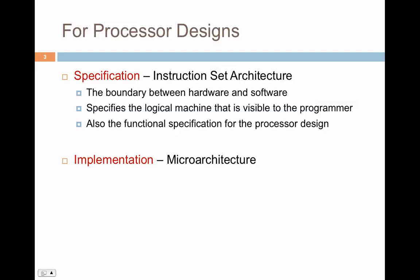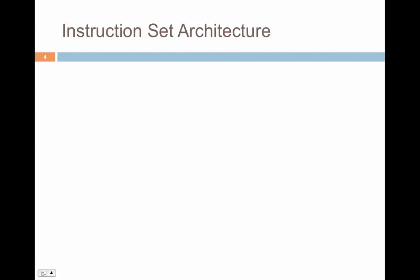We can also do the functional specification of the processor design — specifying exactly how the processor is going to function in terms of hardware components such as the ALU, the multiplexer, the memory, and so on.